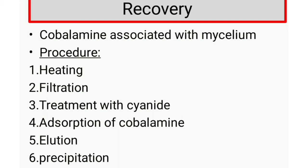The first step is heating. Heating the mixture at pH 5 can liberate the cobalamin from the mycelium. Then it is filtered — filtration is done to remove the mycelium. The third step is treatment with cyanide: the filtrate is treated with cyanide to bring about the conversion of cobalamin to cyanocobalamin.